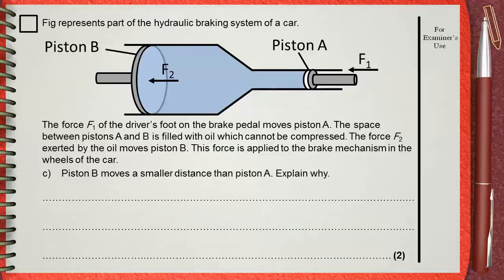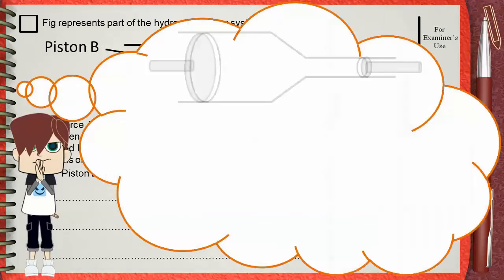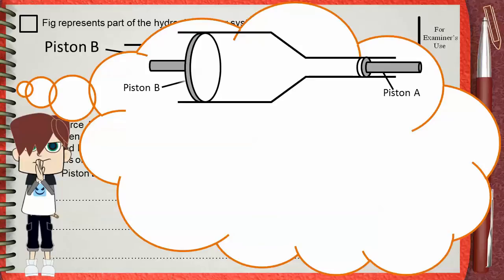Let's imagine this again. This is our hydraulic braking system. This is Piston A and this is Piston B and the oil is between them.